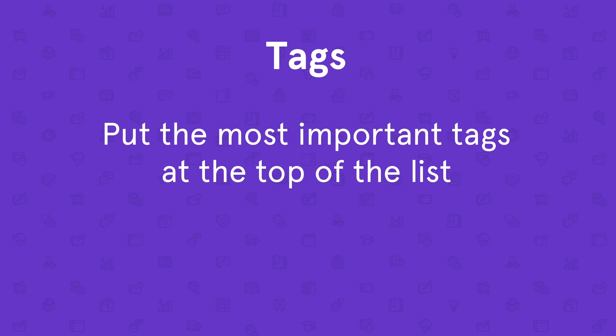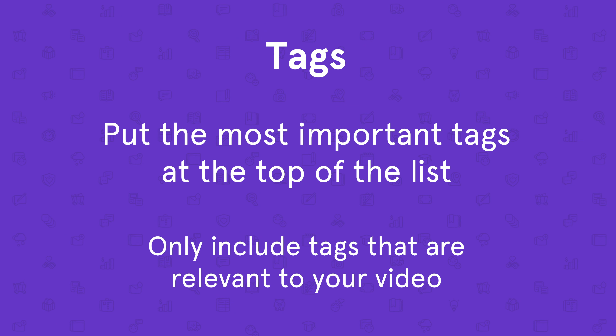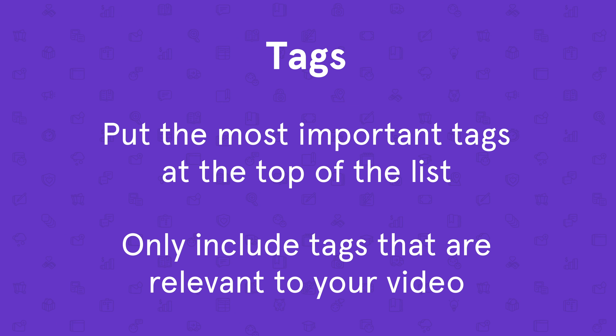Tags: it's debated how significant a role tags play in helping your videos rank, but as long as YouTube gives you a place to share them, it's a good idea to take advantage. YouTube gives you up to 500 characters of space to type in any and all keywords you'd like to rank for. Be sure to put the most important ones at the top of the list and only include keywords that are relevant to your video.